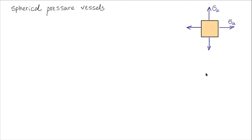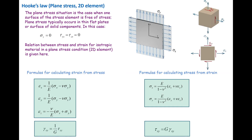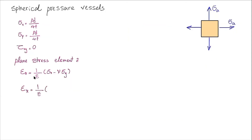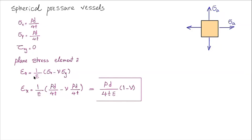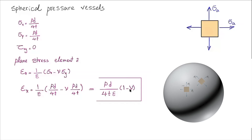Let's start with the spherical pressure vessels. In the spherical pressure vessels, the normal stress is the same in every direction and there is no shear stress. This is going to be a plane stress situation because there is no stress perpendicular to this stress element. For plane stress elements, the generalized Hooke's law gives epsilon_x as (1/E)(sigma_x minus nu times sigma_y). Now replacing sigma_x and sigma_y — both equal to Pd divided by 4t — the strain equation simplifies. So the strain in the horizontal direction is Pd divided by 4tE, multiplied by (1 minus nu). Because spherical pressure vessels are symmetric in every direction, this epsilon_x is valid for every direction.